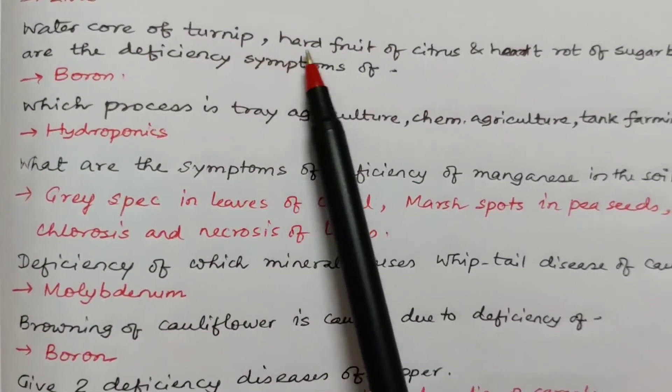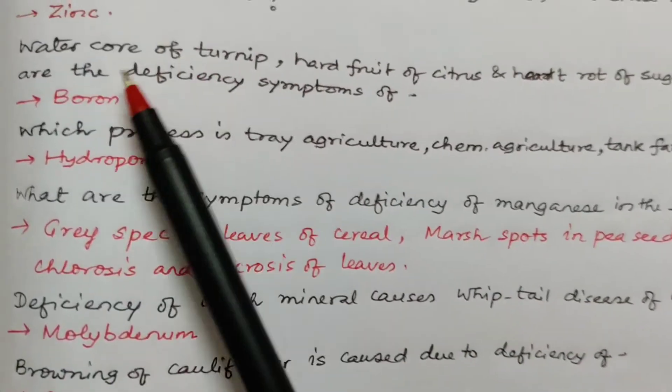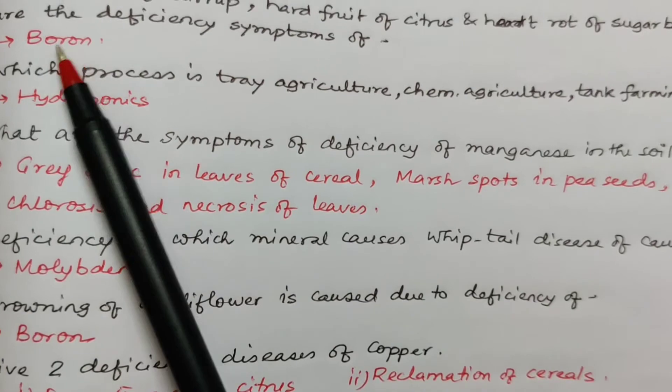Water core of turnip, hard fruit of citrus and hard rot of sugar beet are caused due to the deficiency symptoms of what? It's boron.